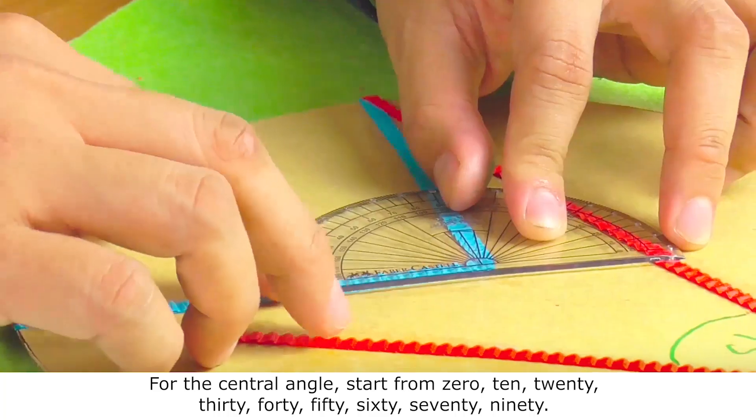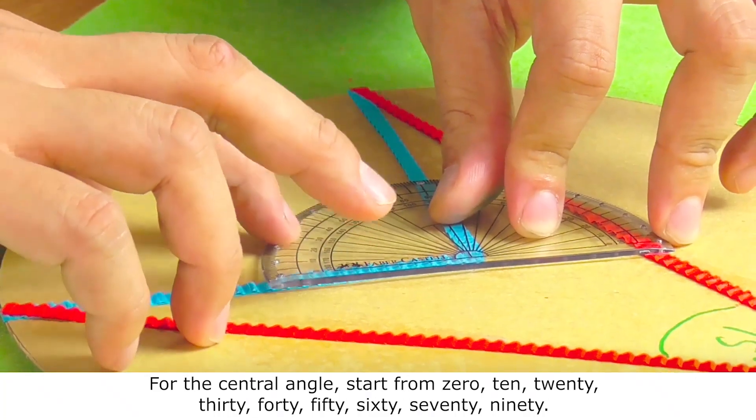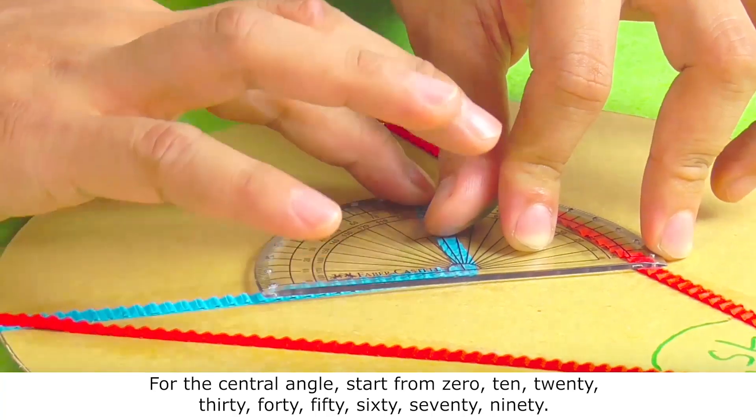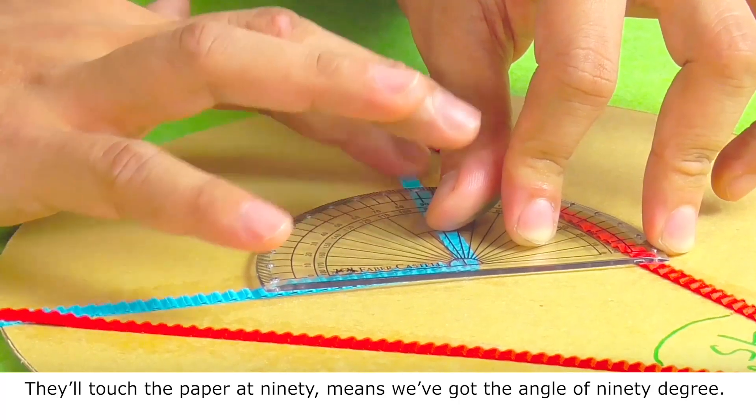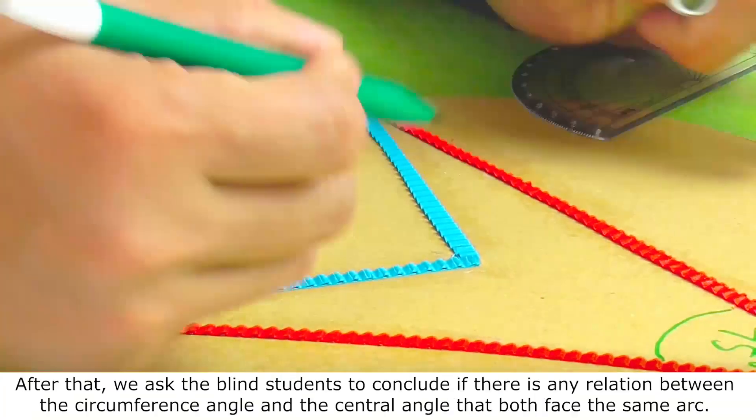For the central angle, start from 0, 10, 20, 30, 40, 50, 60, 70, 90. They will touch the paper at 90. Means we've got the angle of 90 degrees.